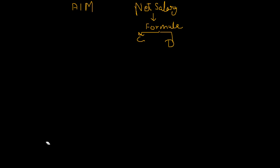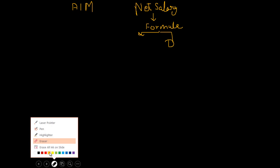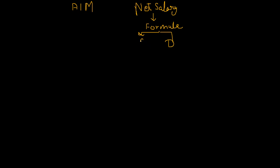There is no universal formula for finding net salary. So we will see that in this question the formula is given to us. What is given is: net salary equals basic minus PF minus tax. Let us take B as basic, P as provident fund, and T as tax. So the formula for finding net salary is given to us in this question.